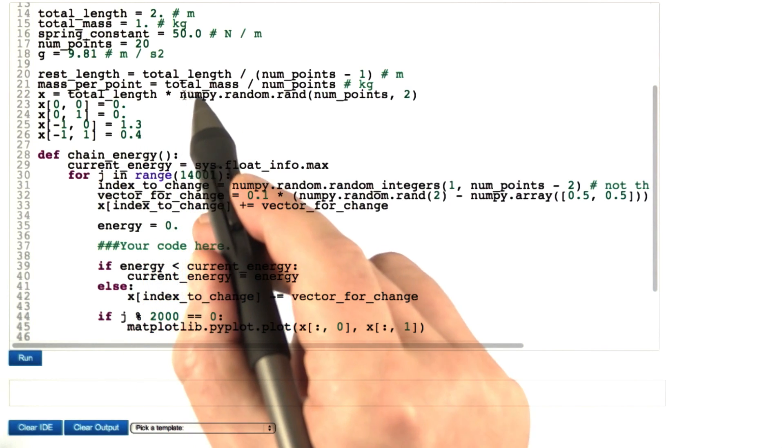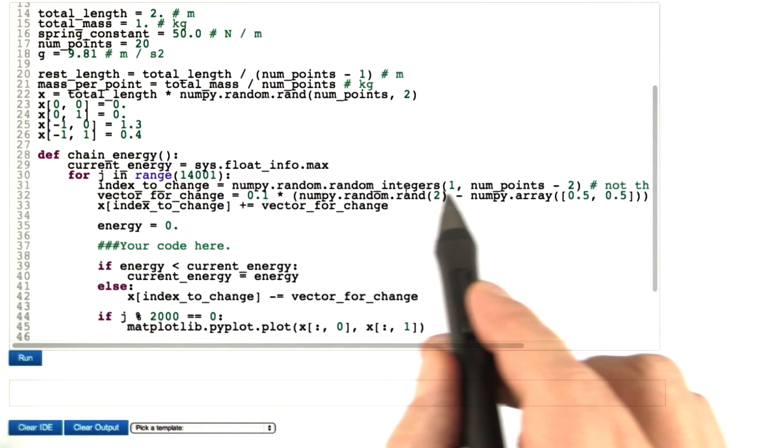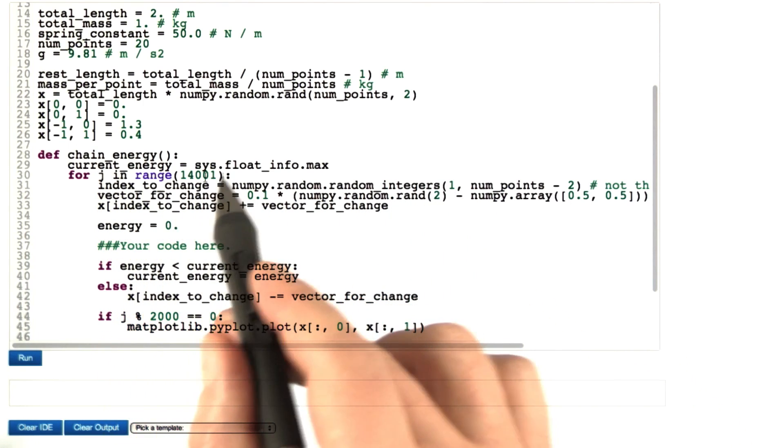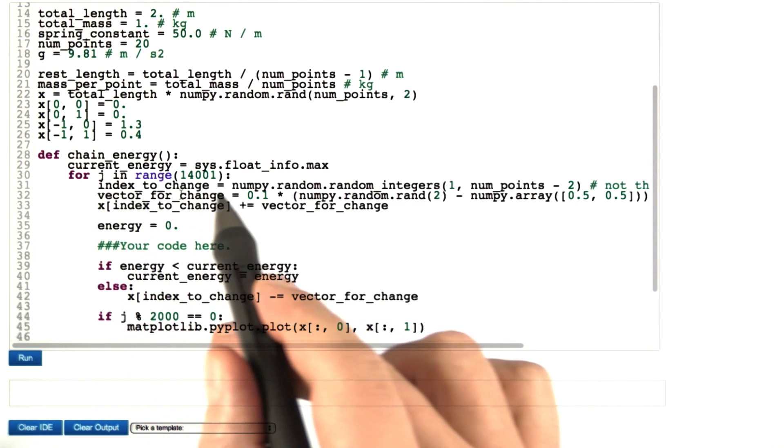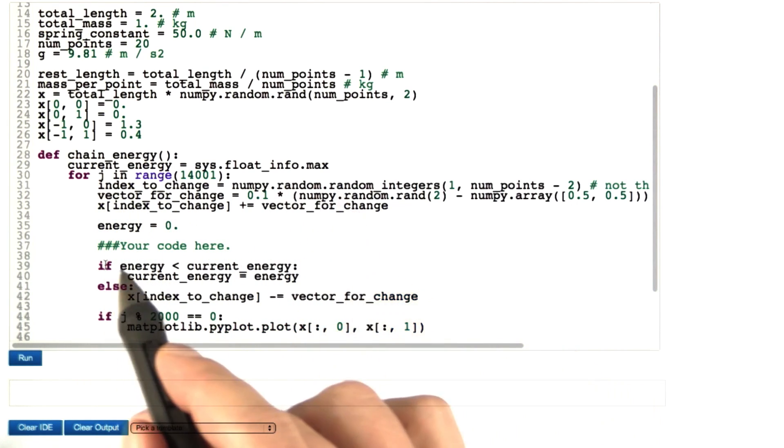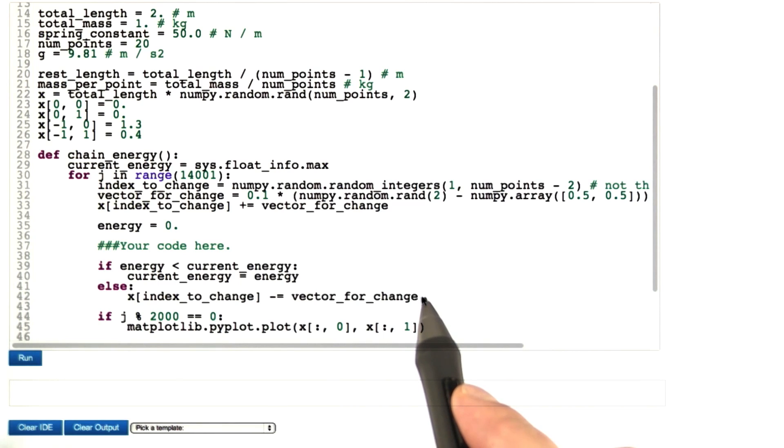Our code starts with a random initialization and then applies a pretty simplistic strategy to minimize the energy. For a certain number of times, it's going to pick one of the masses and change the position of that mass point by a random vector. If the energy decreases, it keeps that new position. If it doesn't, it returns to the position before. Very simple, but highly inefficient.